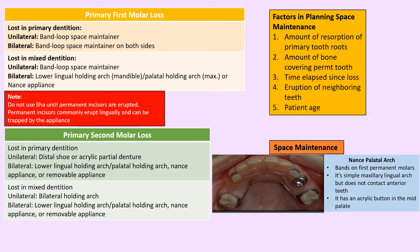To avoid midline shift from unilateral primary mandibular canine loss, remove the canine on the other side too and place a lower lingual holding arch appliance. The band and loop maintainer is a unilateral appliance used when, for example, the primary first molar is lost prematurely. For primary second molar loss, use the distal shoe appliance, which guides eruption of the permanent first molar into its correct position. Once the premolars are about to erupt, remove the distal shoe extension. The Nance appliance is for multiple bilateral space maintenance with premature loss of primary molars; it has an acrylic button on the palate that can be difficult to clean under.